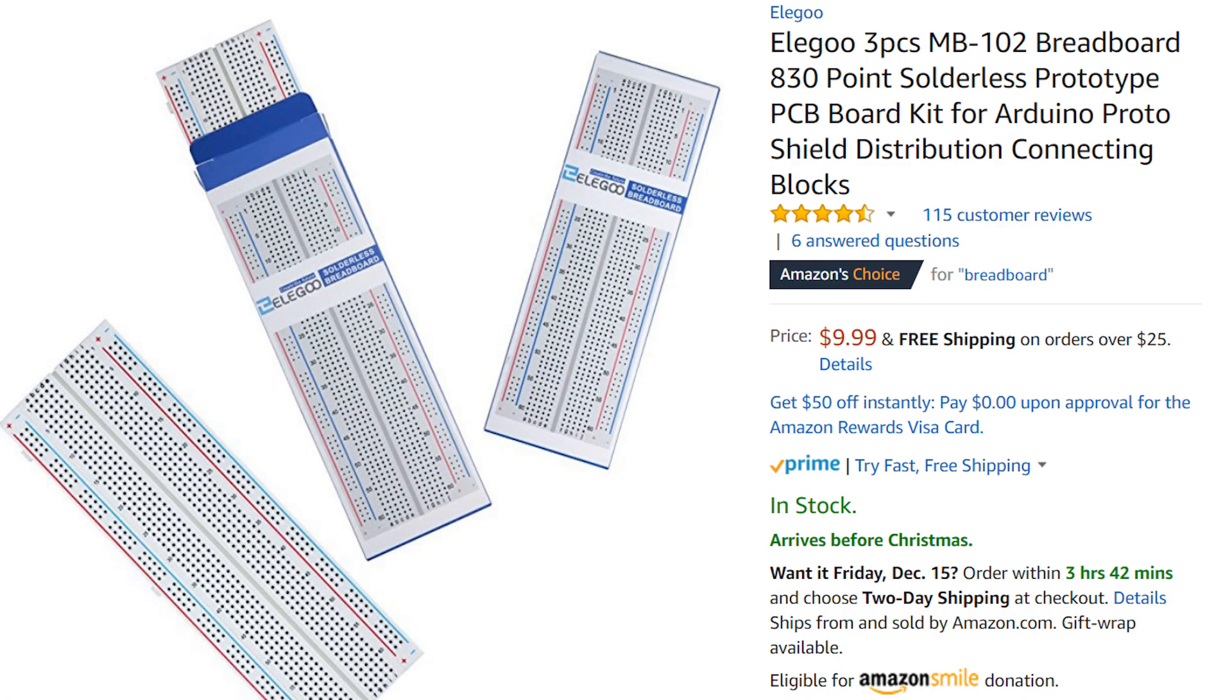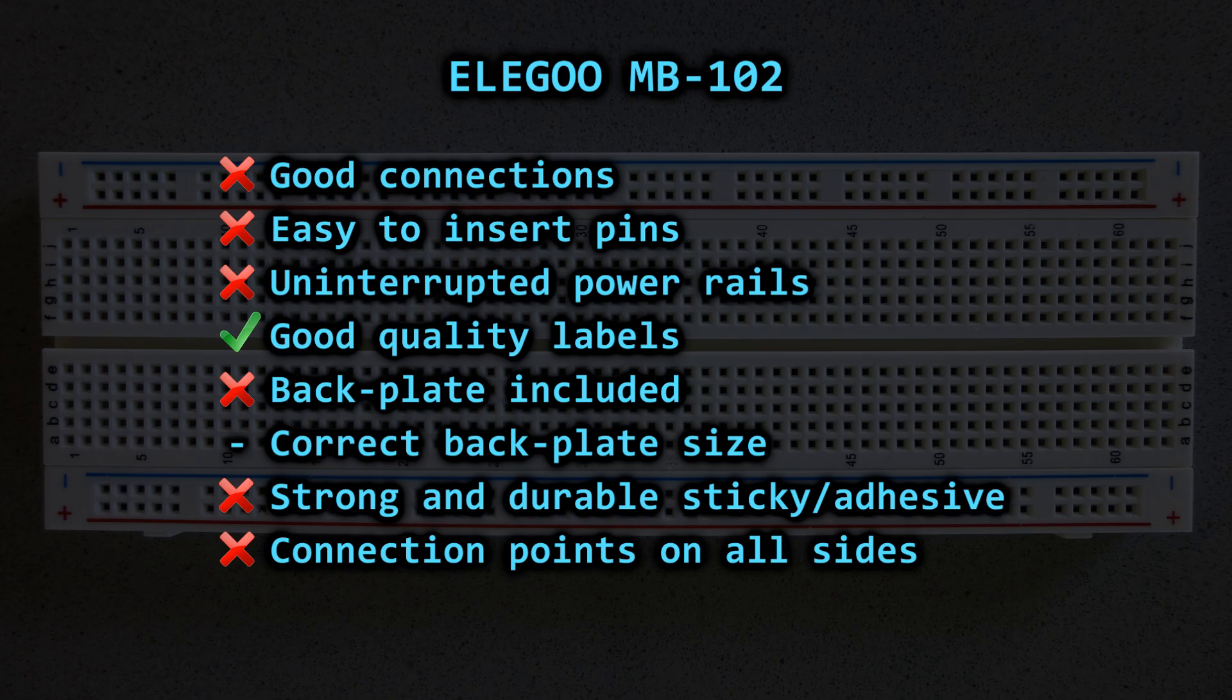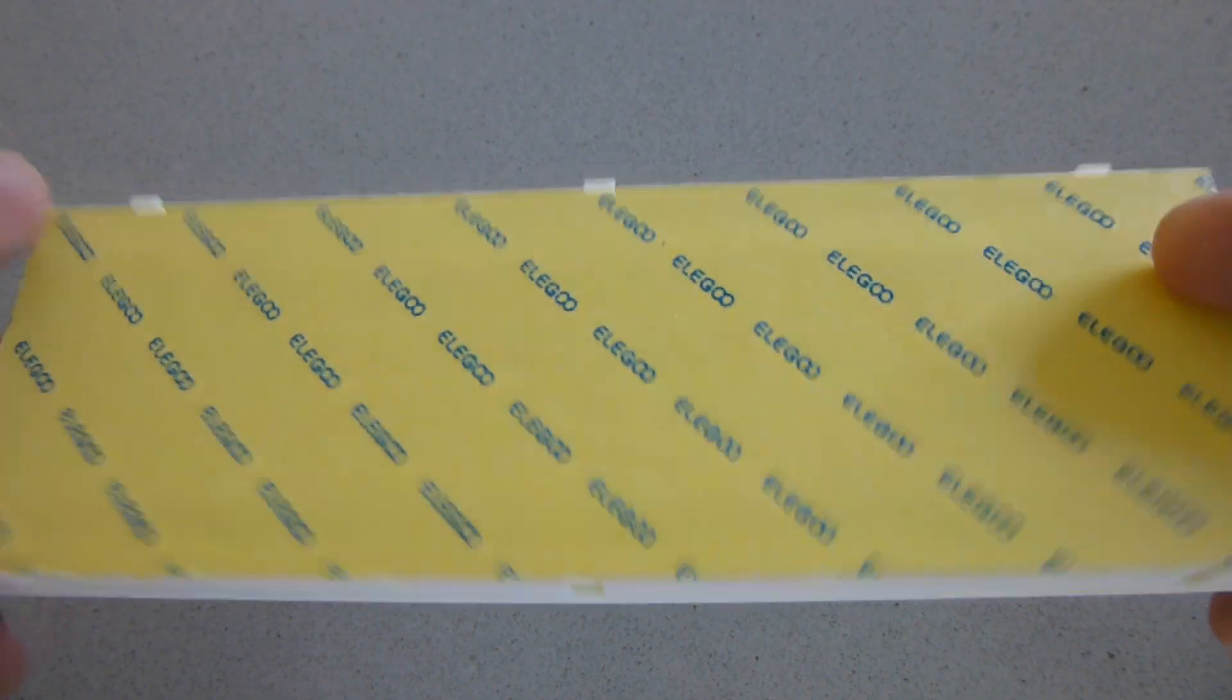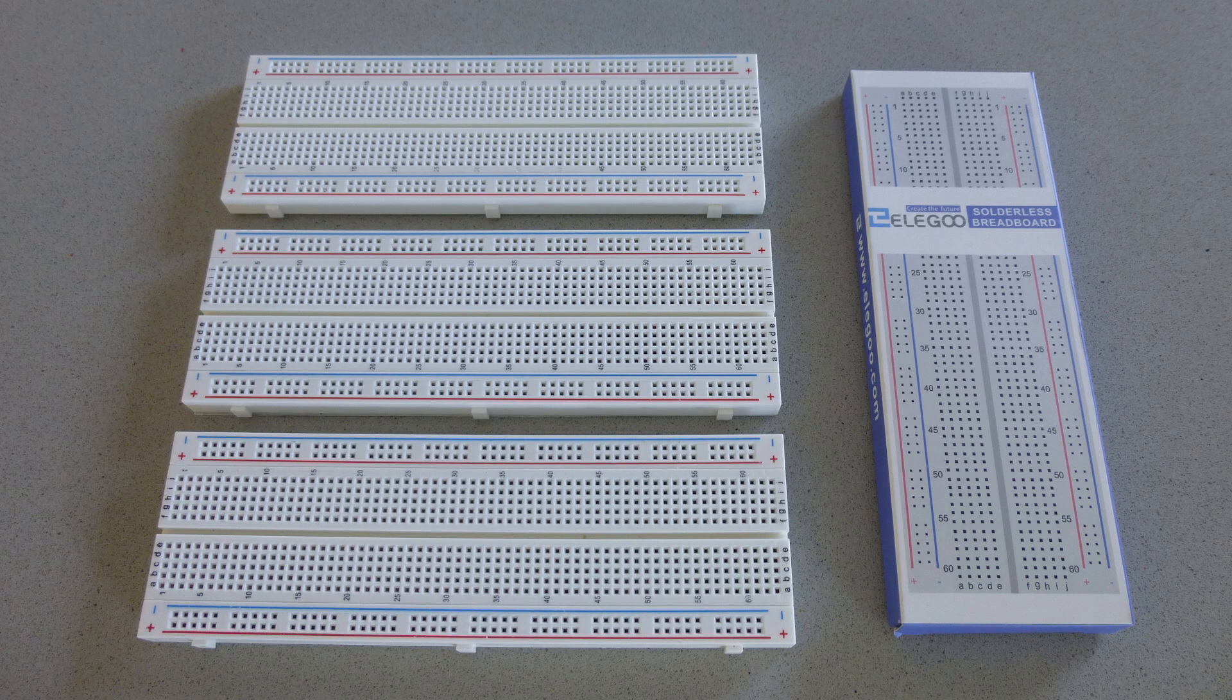The third in my list is the Elegoo, which I saw on Amazon at $10 for 3 breadboards and I thought that because it had good reviews it was going to be decent. But I was wrong. They have dodgy connections, don't come with a backplate and overall it feels cheap. It's simply a terrible product that you should better avoid.